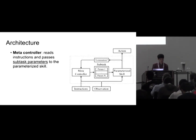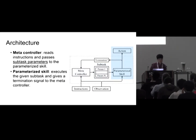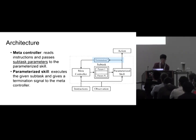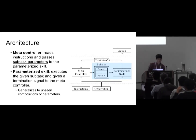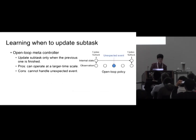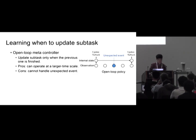To solve this problem, we train a metacontroller on top of the parameterized skill. The metacontroller reads the instructions and passes sub-task parameters to the parameterized skill. The parameterized skill is pre-trained to execute the given sub-task and gives a termination signal back to the metacontroller. The parameterized skill is trained to generalize over unseen compositions of the parameters. Since the metacontroller operates at a high-level sub-task action space, it is natural to consider an open-loop metacontroller that updates the sub-task only when the previous one is finished, allowing the agent to operate at a larger time scale using temporal abstractions.